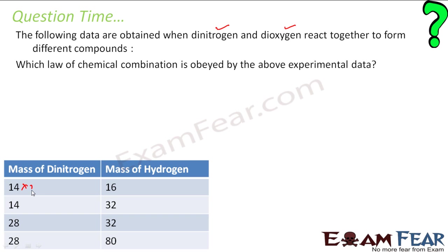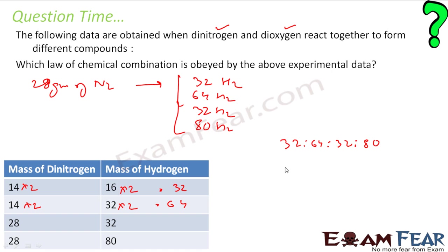So let's make it double so that all the reactants become 28 grams. This becomes 32, this becomes 64. So if you see, I can say that 28 grams of nitrogen reacts with 32 grams of hydrogen or 64 grams of hydrogen in this case or 32 grams of hydrogen in this case or 80 grams of hydrogen in this case. So you find the ratio, you see that the ratio is 32, 64, 32 and 80. This becomes 2, 4, 2, 5. This is the ratio. And this is the whole number ratio. Thus, this is nothing but the law of multiple proportion.